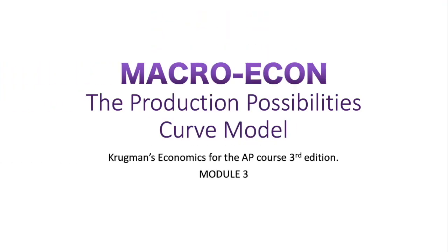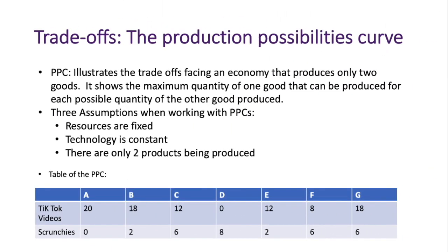Today we're going to go over the production possibilities curve — this is module three. The PPC illustrates trade-offs facing an economy that produces only two goods. It shows the maximum quantity of one good that can be produced for each possible quantity of the other good. There are three assumptions: resources are fixed, technology is constant, and there are only two products being produced.